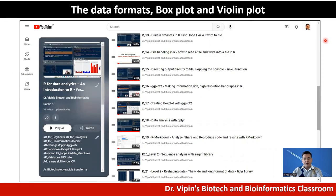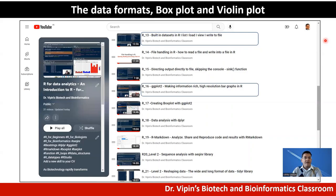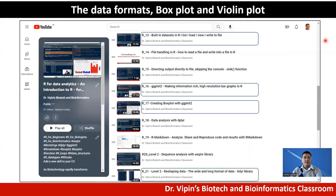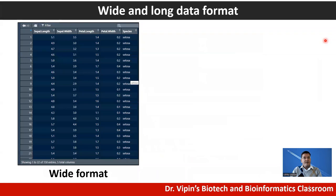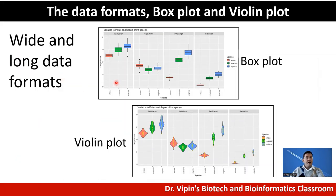The lectures you should already have gone through include R_13 on built-in datasets in R, because we're going to use the iris dataset today. R16 introduced ggplot2 for making information-rich, high-resolution bar graphs. In R_17, we first created our box plot. And the last lecture you should go through before this one is R_21, level 2, where we talked about reshaping of data. Today we discuss wide and long data formats, the box plot, and how to create a violin plot with an embedded box plot.